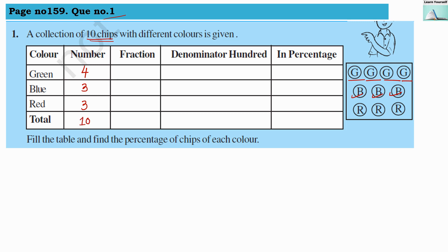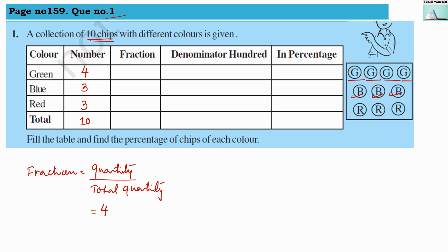To represent this as a fraction, it is the desired quantity divided by the total quantity. Our desired quantity is four because we are writing the fraction for green color chips. Green chips are four in quantity, and the total quantity is ten. So the fraction for green color chips is 4/10.